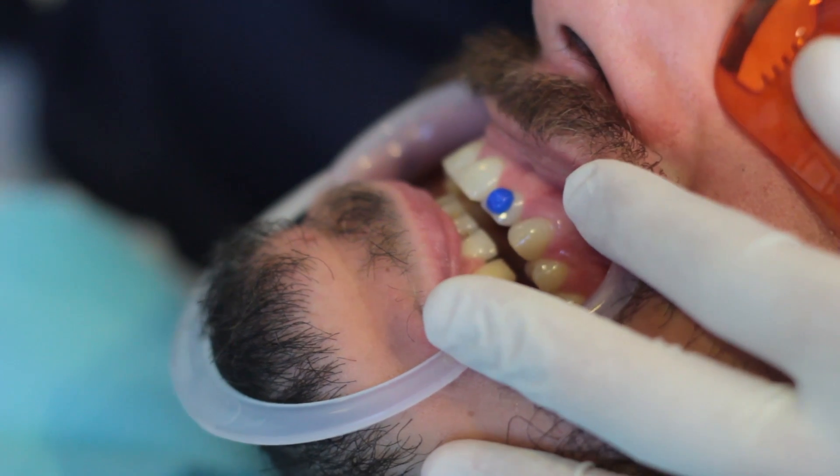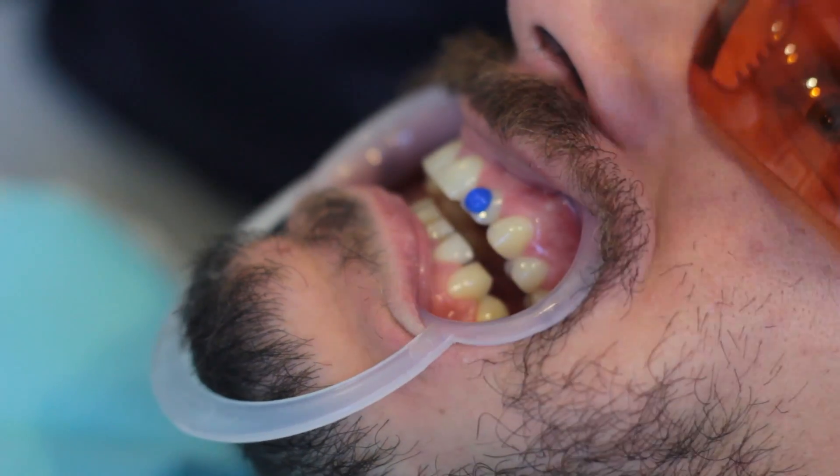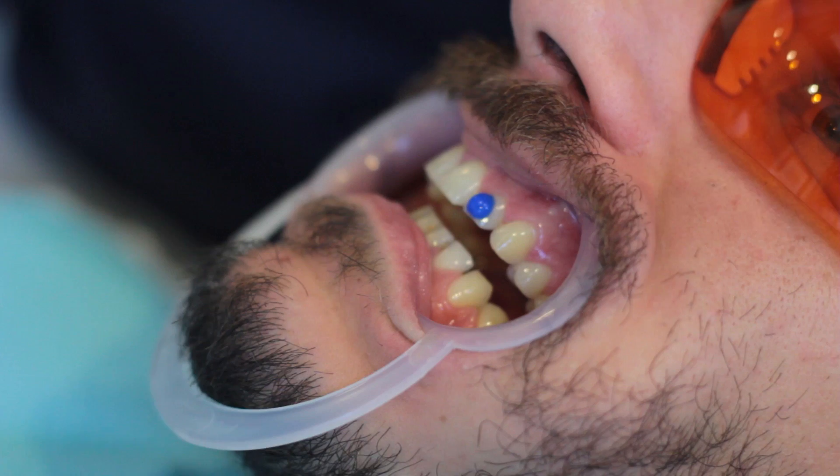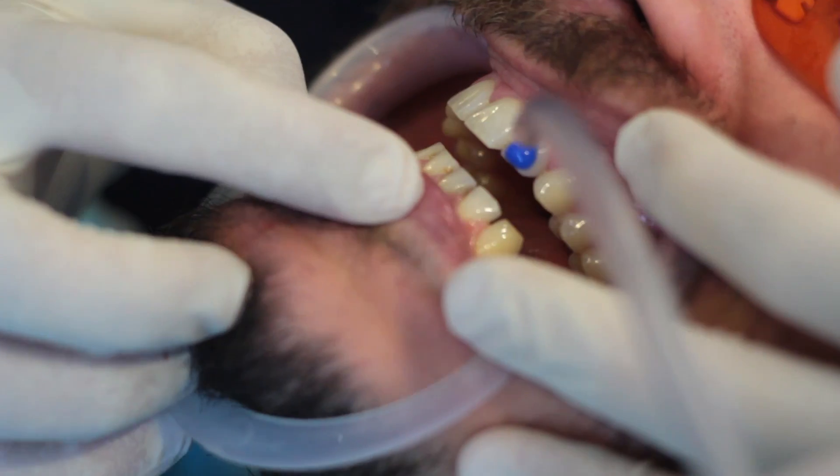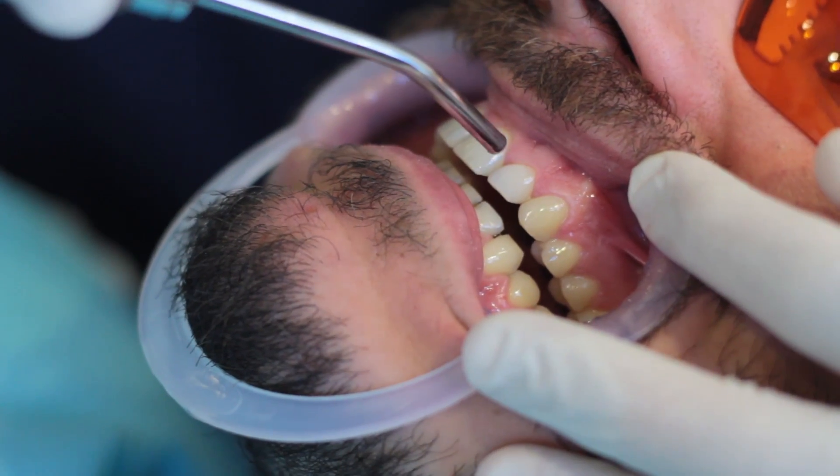Be careful not to etch the entire tooth surface, but only the area where the attachment will be placed. We then rinse and dry the area until a frost appearance is apparent.